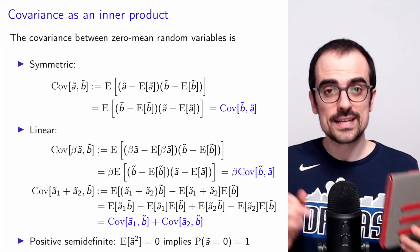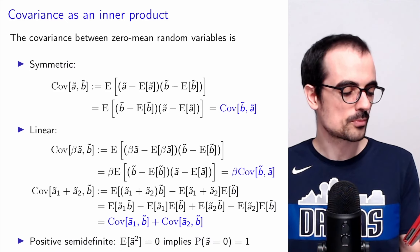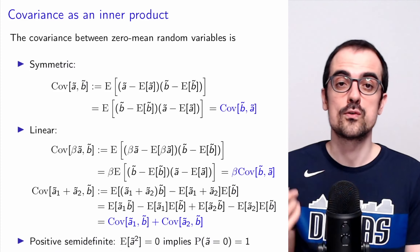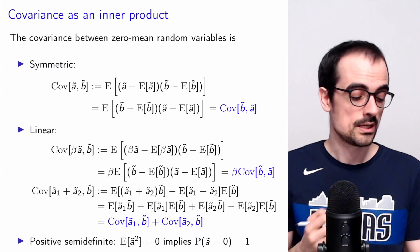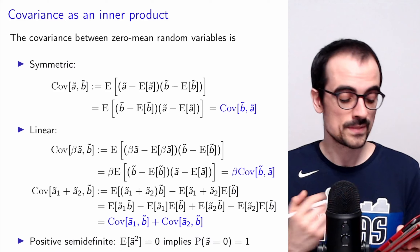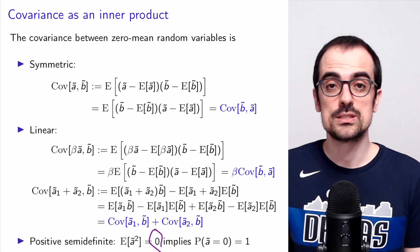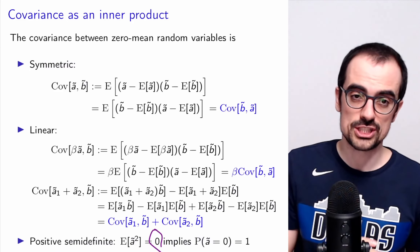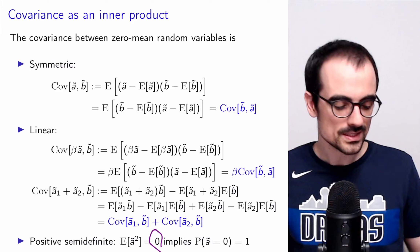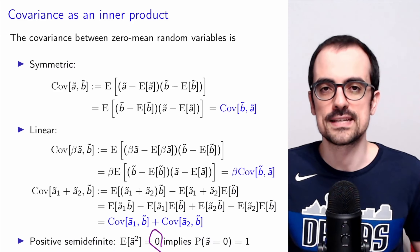The more tricky property — and the previous two hold even if the random variables are not centered — is that the covariance is positive semi-definite. This happens for zero-mean random variables because the covariance of a random variable with itself equals the mean square. When a random variable has mean square equal to zero, this implies that the random variable equals zero with probability one, which follows from Chebyshev's inequality. This is why we need zero-mean random variables to build a covariance that is a valid inner product.